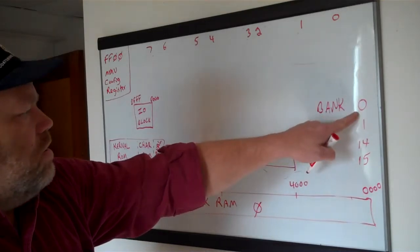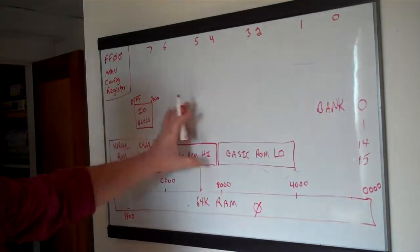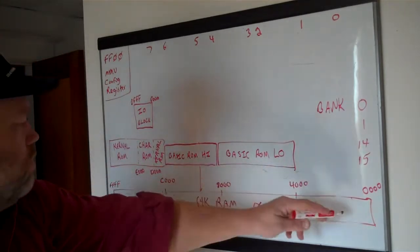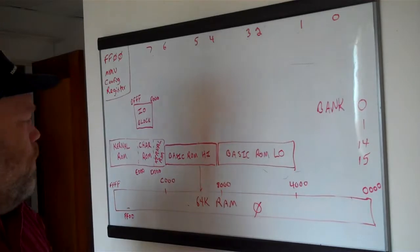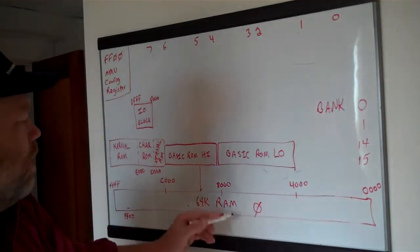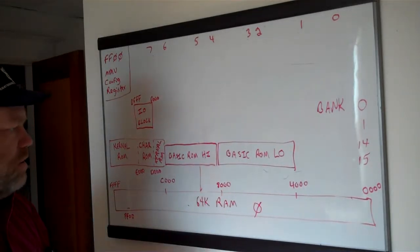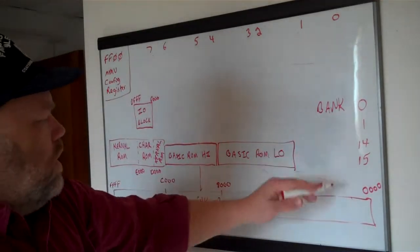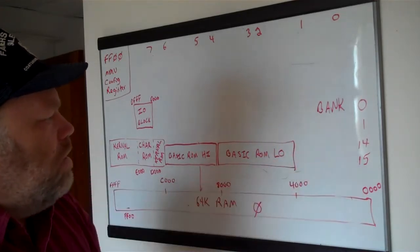First, the BANK command in BASIC, because it's simple. Bank 0 gives you just the RAM — it turns off all the ROMs and the I/O block so you're talking directly to the RAM layer. Bank 1 does the same thing but the RAM layer it gives you is RAM bank 1, the other 64K layer, because the 128 has two 64K layers.